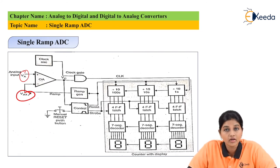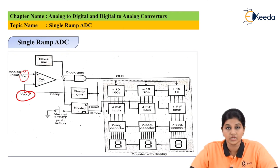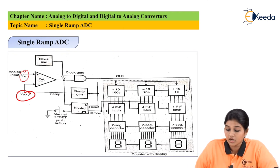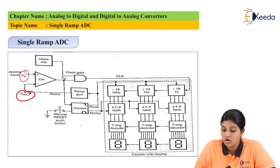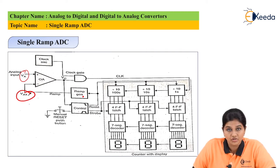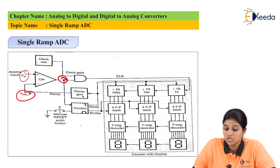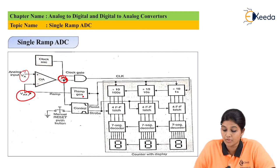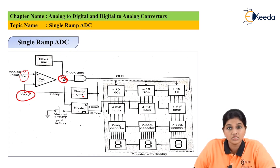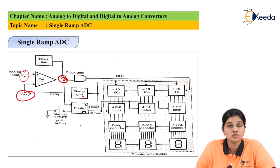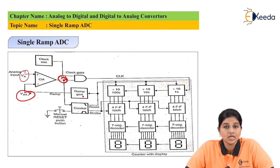The block diagram consists of a counter with display, which is used to display the output result. A control block is present for resetting the ramp generator as well as the counter. The output of the ramp generator is also applied as one input to the comparator, which compares two signals and produces output voltage VC. VC acts as one input to the control for producing the strobe signal, and is also applied to the AND gate whose output acts as the clock signal to the counter.